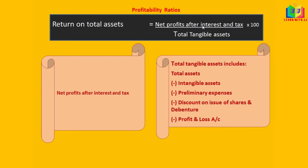Return on total assets: net profit after interest and tax divided by total tangible assets. Total tangible assets means total assets minus intangible assets. Intangible assets include goodwill, patent, copyright, trademark, preliminary expenses, discount on issue of shares and debentures, and any profit and loss on the asset side also has to be subtracted. The balance is the total tangible assets.